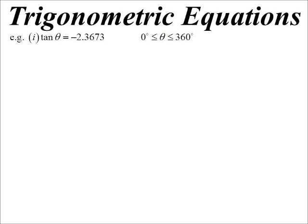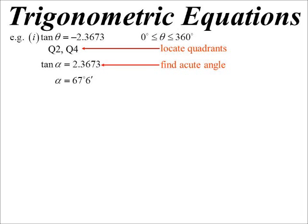So the thought process for something like this: we go, okay tan is negative so the first thing I would do is go okay which quadrants are we in? We say alright, we're in quadrant 2, we're in quadrant 4. Once we've identified that, it comes down to that idea of finding the acute angle, the associated acute angle.